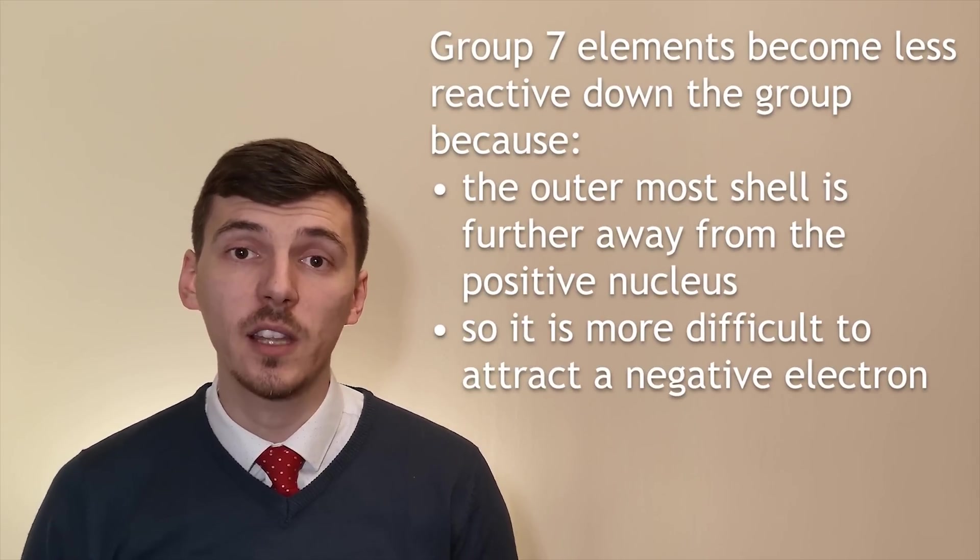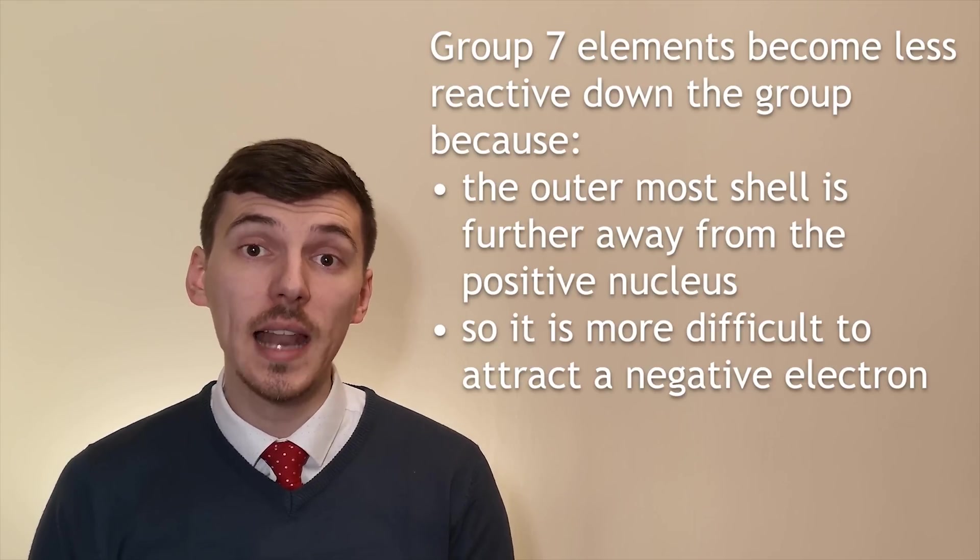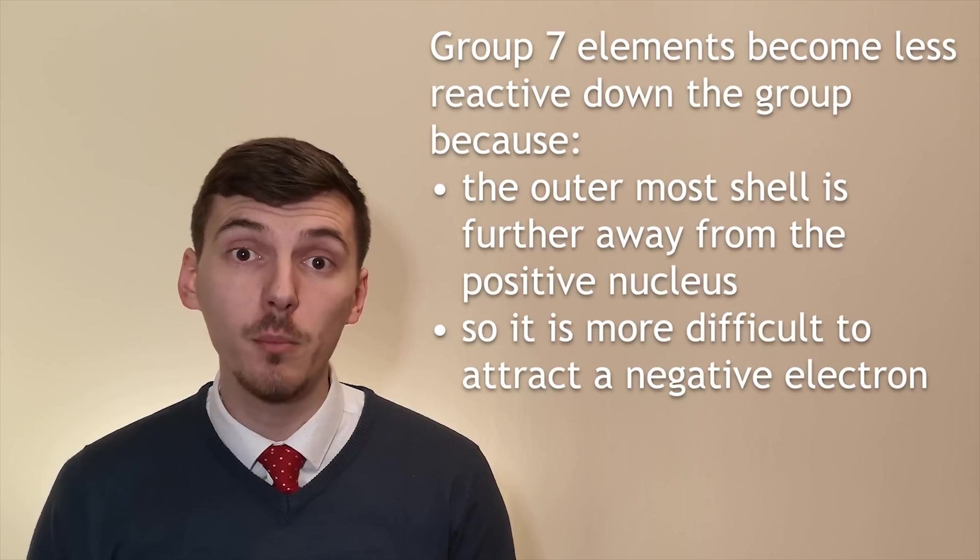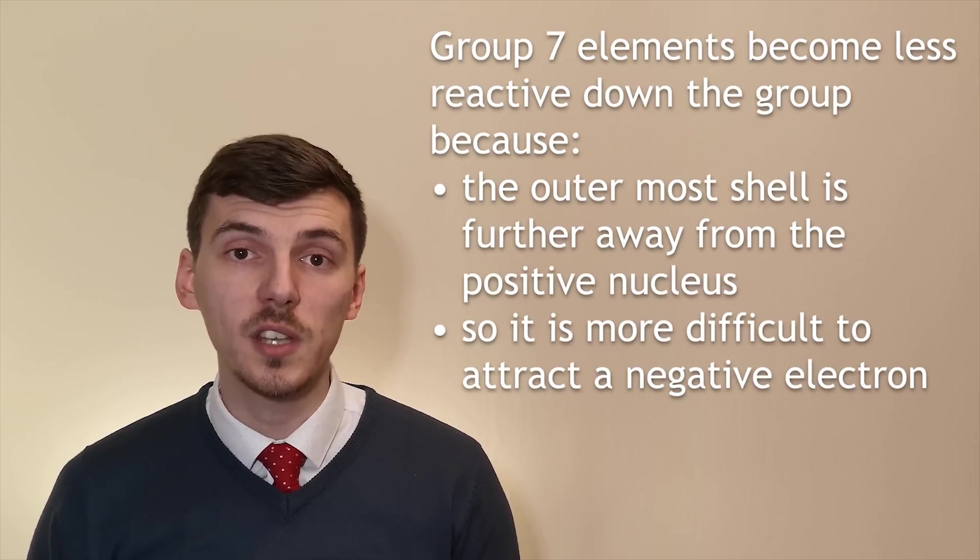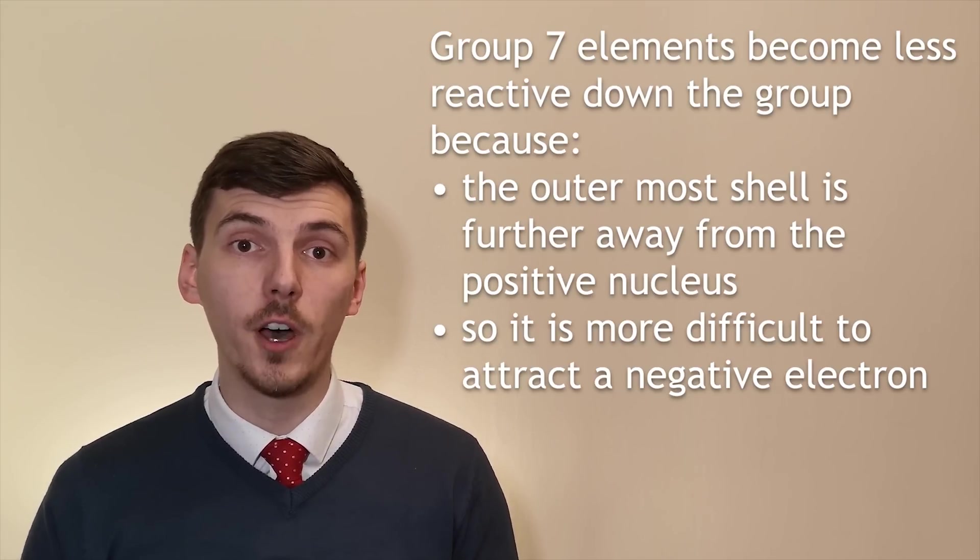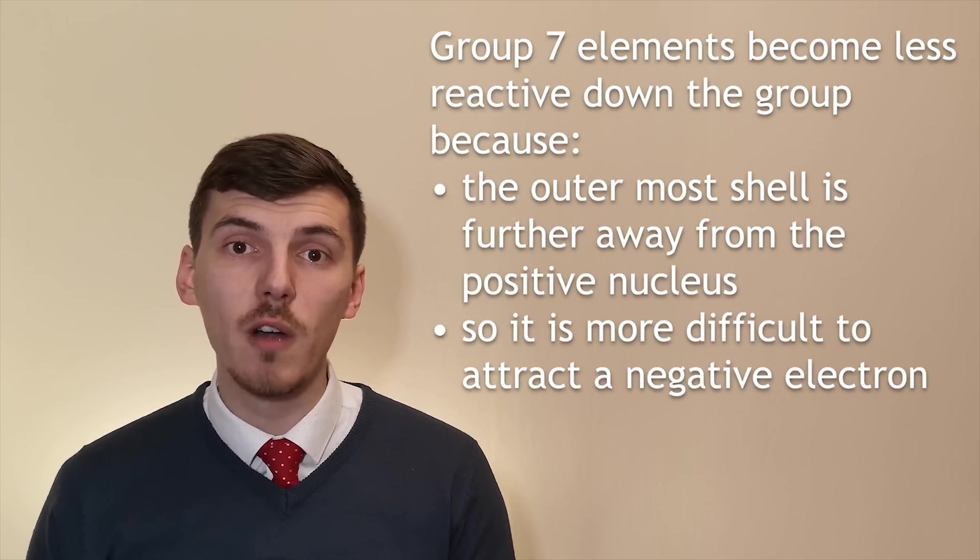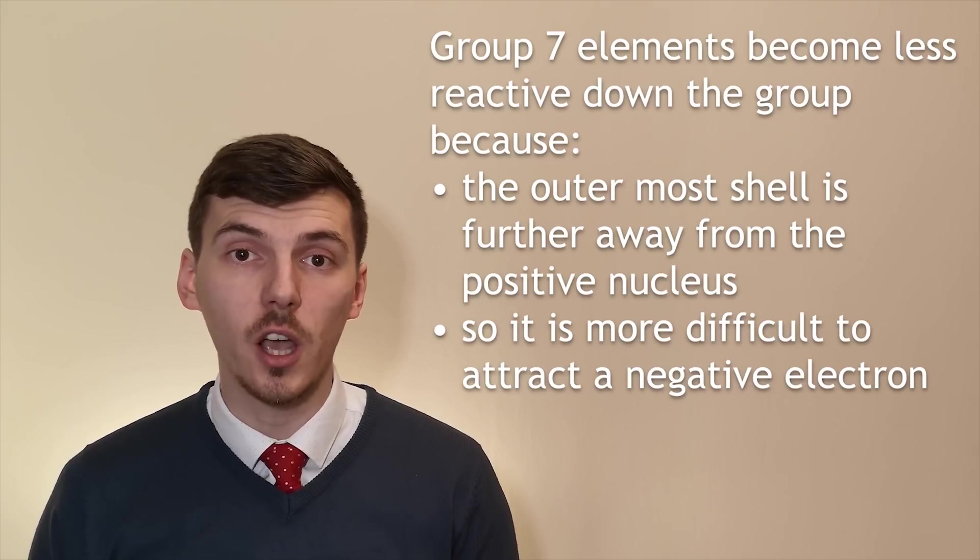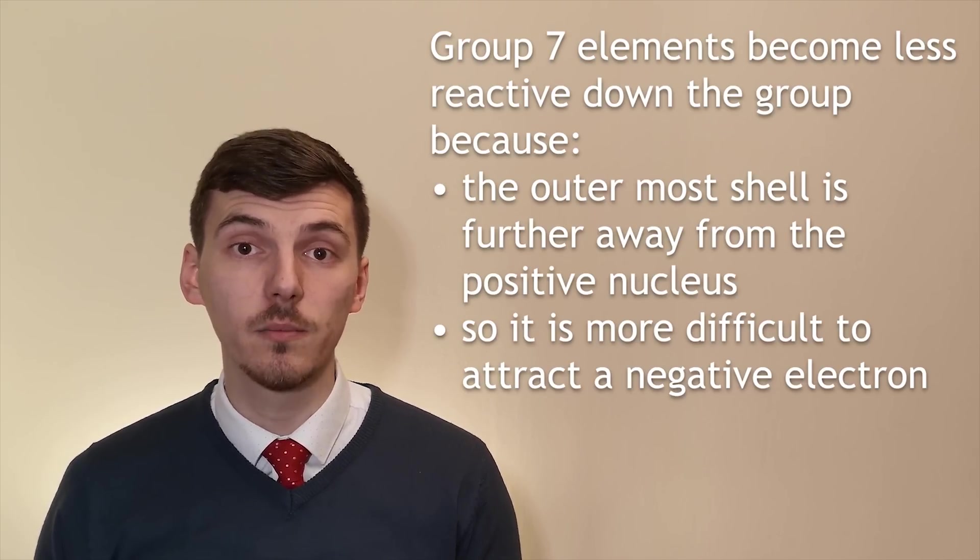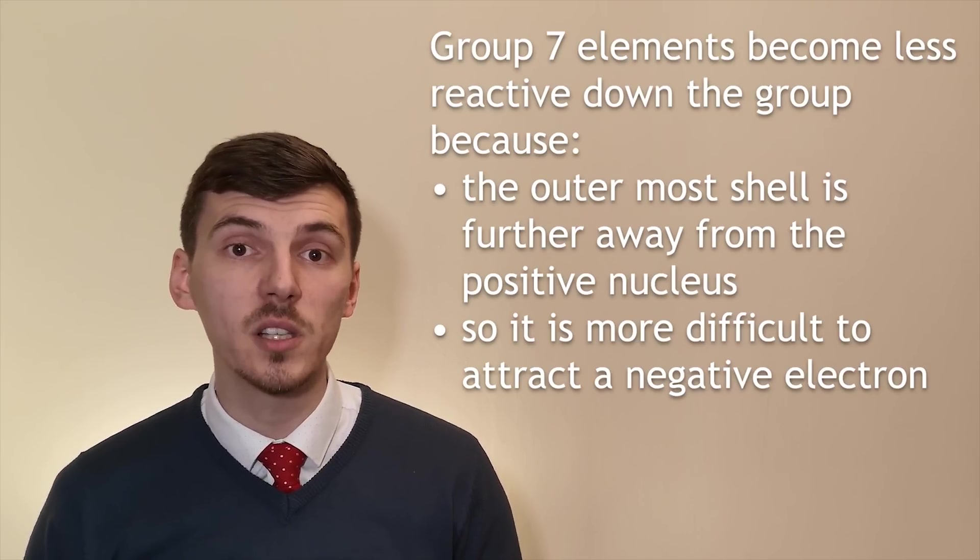The group 7 elements behave in the opposite way to the group 1 elements. As we go down the group we find they become less reactive. This is to do with a very similar reason to group 1 and how they become more reactive. As you go down group 7 the elements have more and more shells of electrons meaning that outermost electrons are further and further away from the positive nucleus. That makes it very difficult for them to attract electrons which are negatively charged and so the further down the group the more difficult it is to react. That means that elements like fluorine and chlorine are way more reactive than elements like iodine.